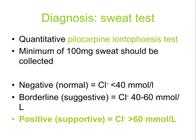The sweat test is officially called the quantitative pilocarpine iontophoresis test. A minimum of 100 mg of sweat should be collected. A normal or negative test is less than 40 mmol of chloride. A borderline is 40 to 60, and positive — being supportive of the diagnosis of cystic fibrosis — is a sweat chloride content of over 60 mmol. False positive tests can occur in adrenal insufficiency, ectodermal dysplasia, glycogen storage disease and familial hyperparathyroidism.